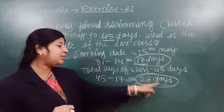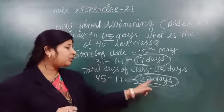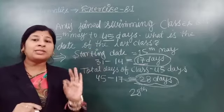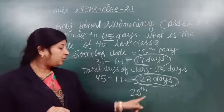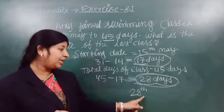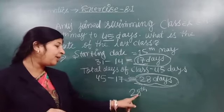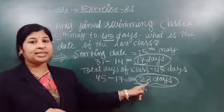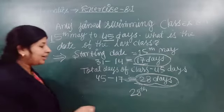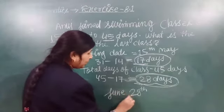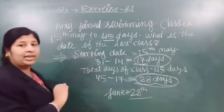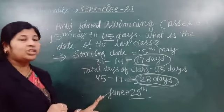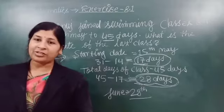Because up to here we have 28 days — his last day will be at 28 days total. So what will be the last day? The last from 1 to 28 is 28. So that is our date. The 28th date will be the last date of Anuj's class. Now which month is this? May month finished after 17 days. The next 28 days will come in June month. Very nice. So, 28th June will be the last date of Anuj's class. Clear? Very good. Now we go to the next question.